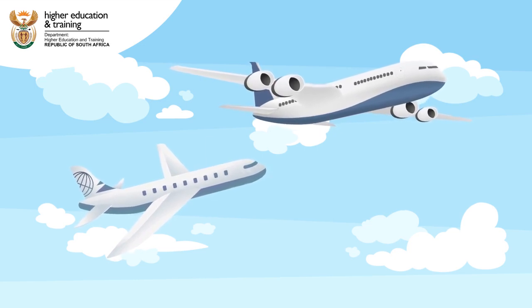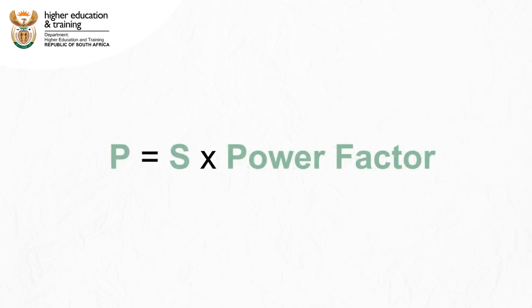A greater proportion of the energy is spent doing useful work. We call the ratio between active power and apparent power the power factor of the circuit. We can rearrange this to get active power equal to apparent power multiplied by the power factor.